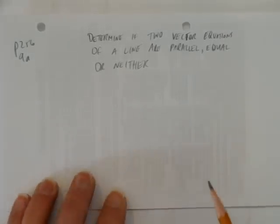So in this video, we'll look at how to determine if two vectors, that is, two vector equations of a line, are parallel, equal, or neither. And this begins on page 256. It actually is on page 257. And we'll look at question 9a.